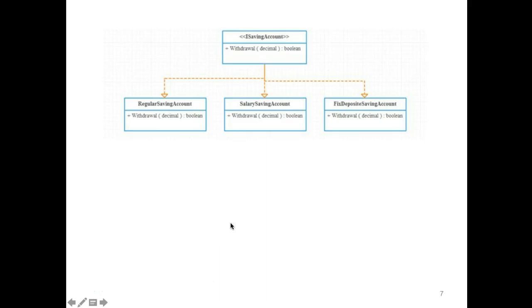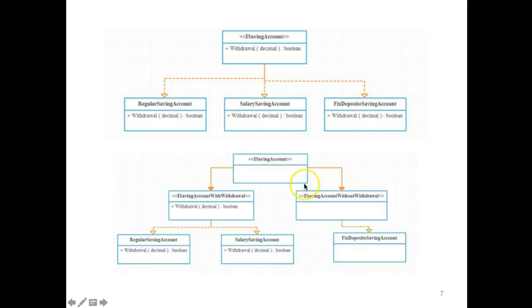Going back to the example of accounts: this is a saving account—this is a regular, salary saving, and fixed deposit salary saving. The idea here is that you cannot withdraw from this fixed deposit account; there are rules. But you can easily withdraw from the other two. What's the issue? If you were to withdraw here and you passed a fixed deposit saving account, you get an error. And the solution is this...